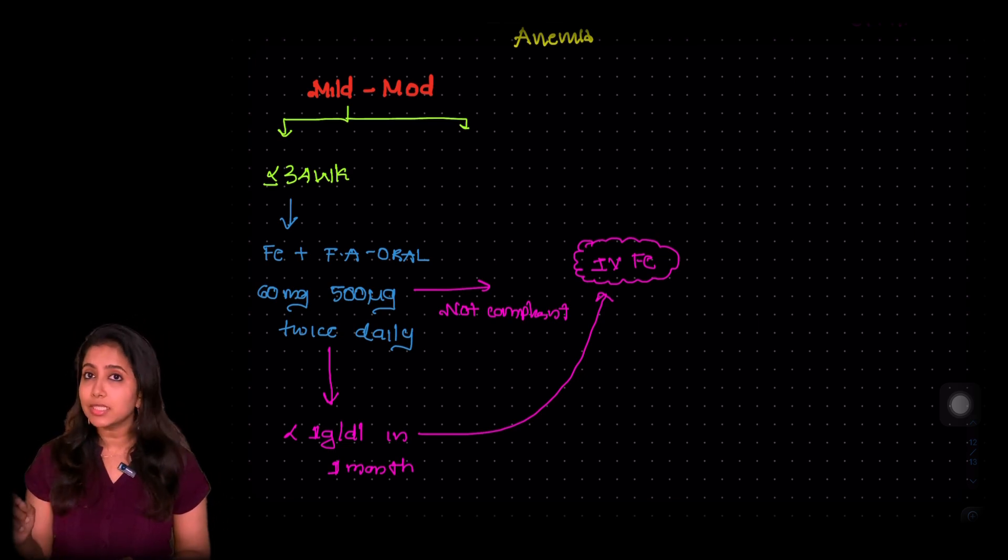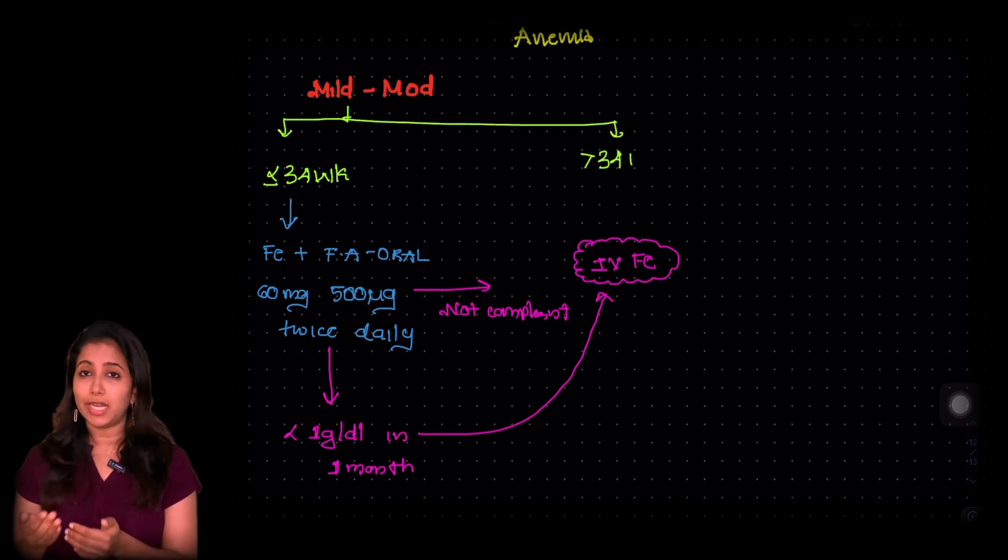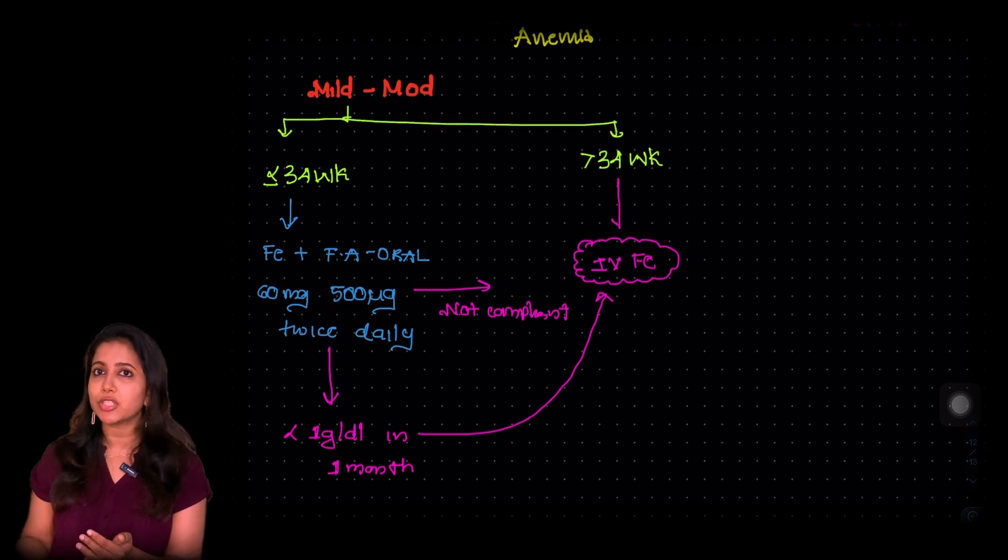So the next thing is if the patient is more than 34 weeks. Now we have less time, so we would be giving the patient IV iron.